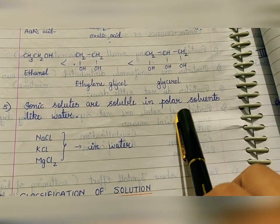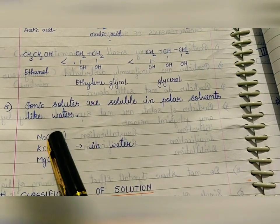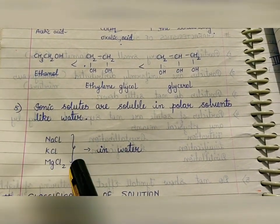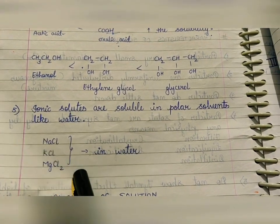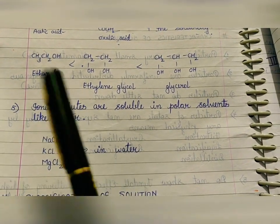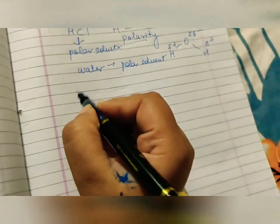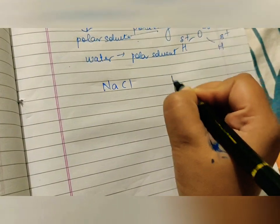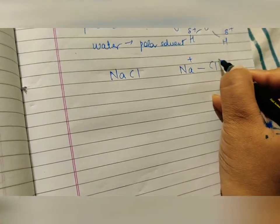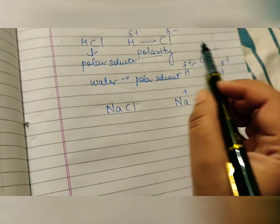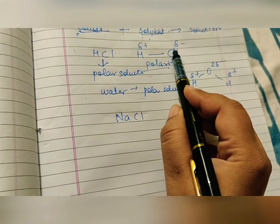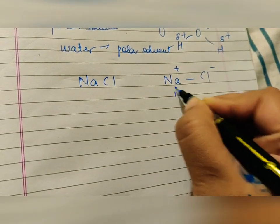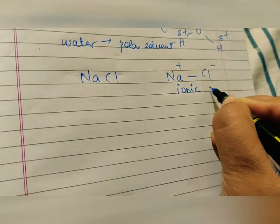Ionic compounds have complete dispersion of charges. For example: NaCl gives Na⁺ and Cl⁻; KCl gives K⁺ and Cl⁻; MgCl₂ gives Mg²⁺ and 2Cl⁻. They are all soluble in water. In NaCl there is complete dispersion of charges — unlike HCl which has partial positive and negative charges. Such compounds with complete charge dispersion are called ionic compounds.